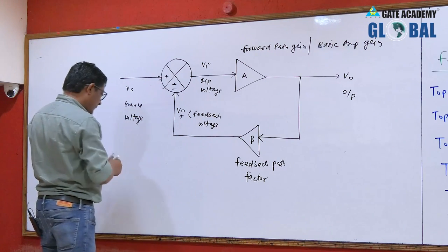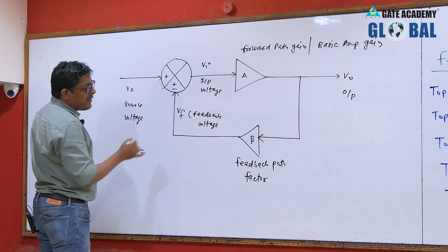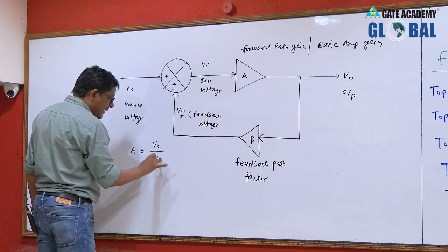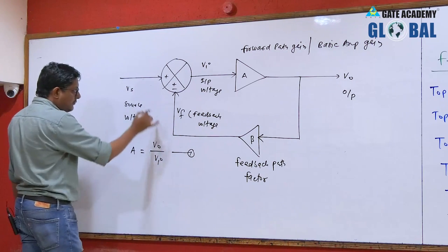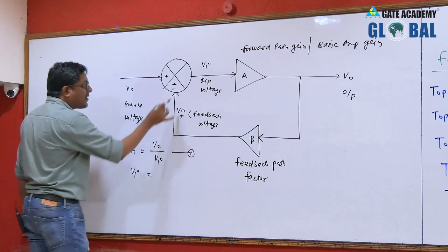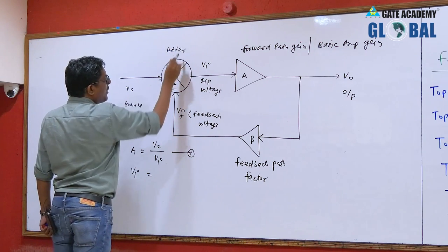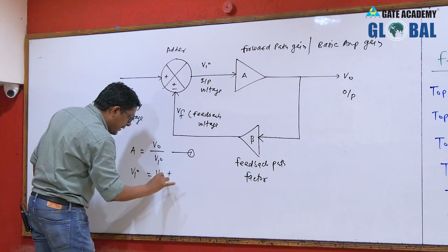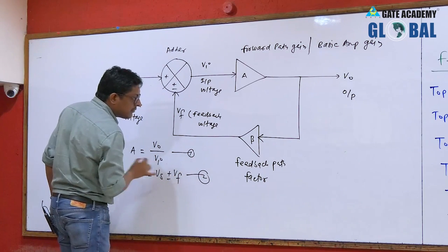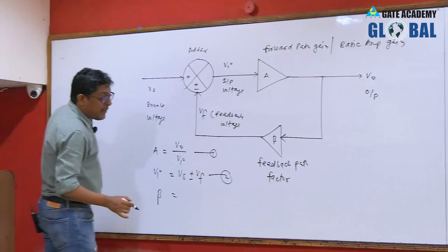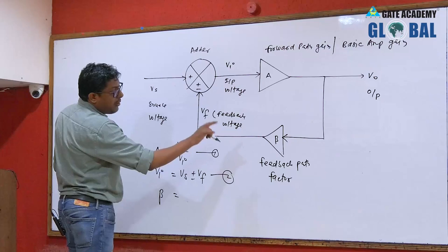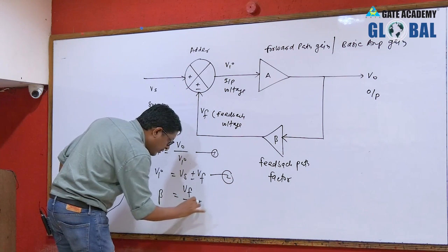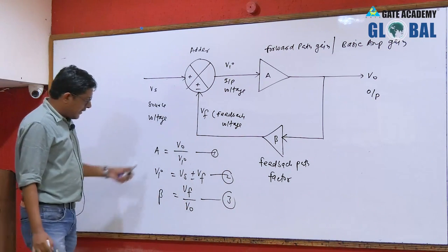From this structure, we can write three equations. Equation 1: forward path gain A equals V0 divided by VI. Equation 2: input voltage VI is the result of the adder — this adder is used for addition as well as subtraction of signals, so VI equals Vs plus or minus Vf. Equation 3: feedback path gain beta — the output of beta is Vf and the input is V0, so Vf equals beta times V0.